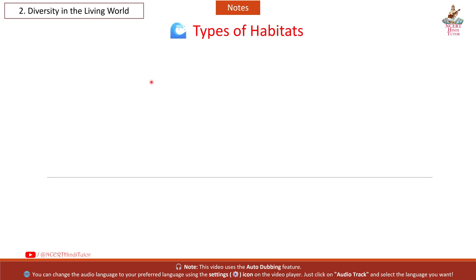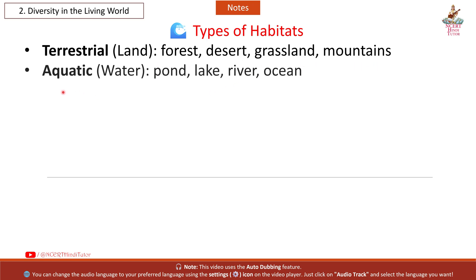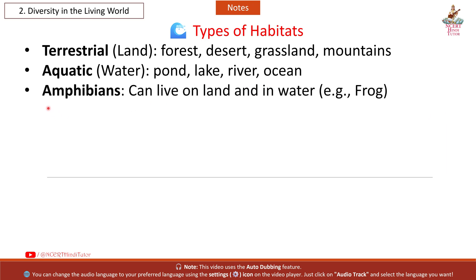Types of Habitats: Terrestrial — land habitats like forest, desert, grassland, and mountains. Aquatic — water habitats like pond, lake, river, and ocean. Amphibians can live both on land and in water — example: frog.